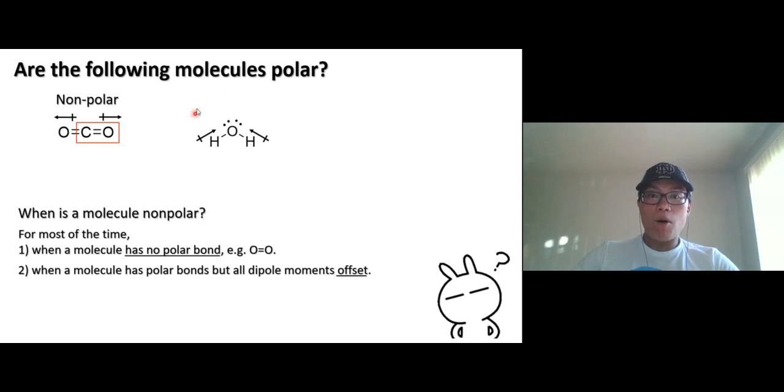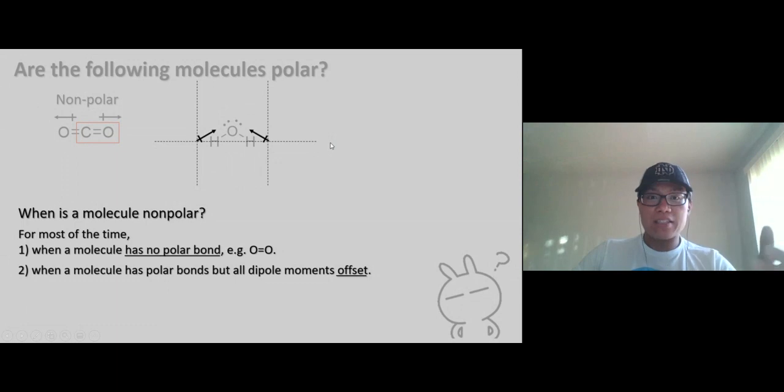Do these two dipole moments cancel each other? Actually, no. I mean, we're going to talk about physics, just a little bit of physics in here. Any vectors, if you still remember, any diagonal vectors can be separated into x and y-axis vector. So this one right here, the x-axis, of course, they cancel each other out, but the y-axis, they add up right there, which means that the dipole moment, the net dipole moment of water pointing up, look like that.